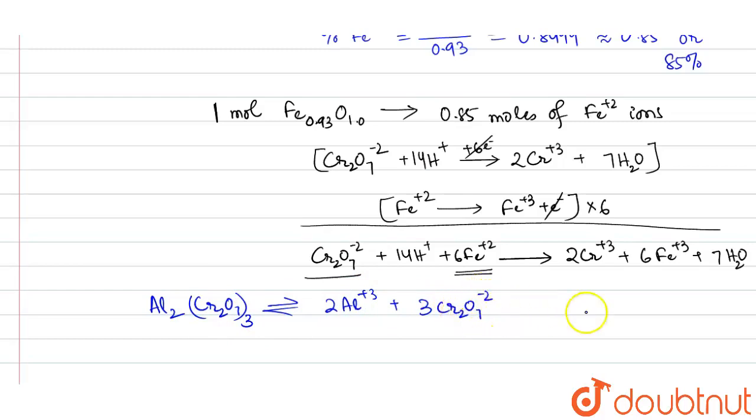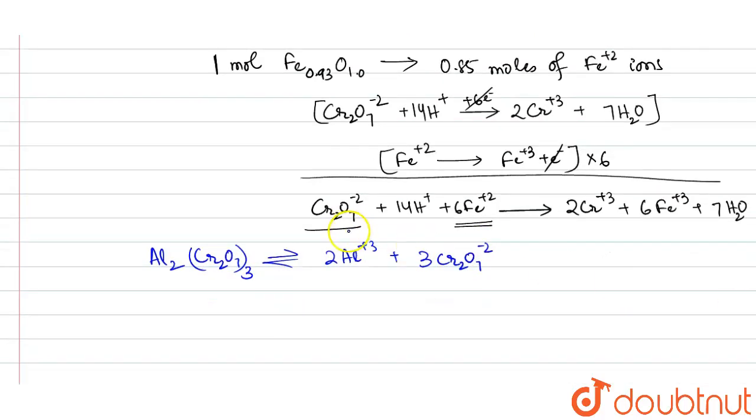Now if one mole of Cr₂O₇²⁻ oxidizes 6 moles of Fe²⁺ ions, then three moles of Cr₂O₇²⁻ will be oxidizing three times that number of Fe²⁺ ions.